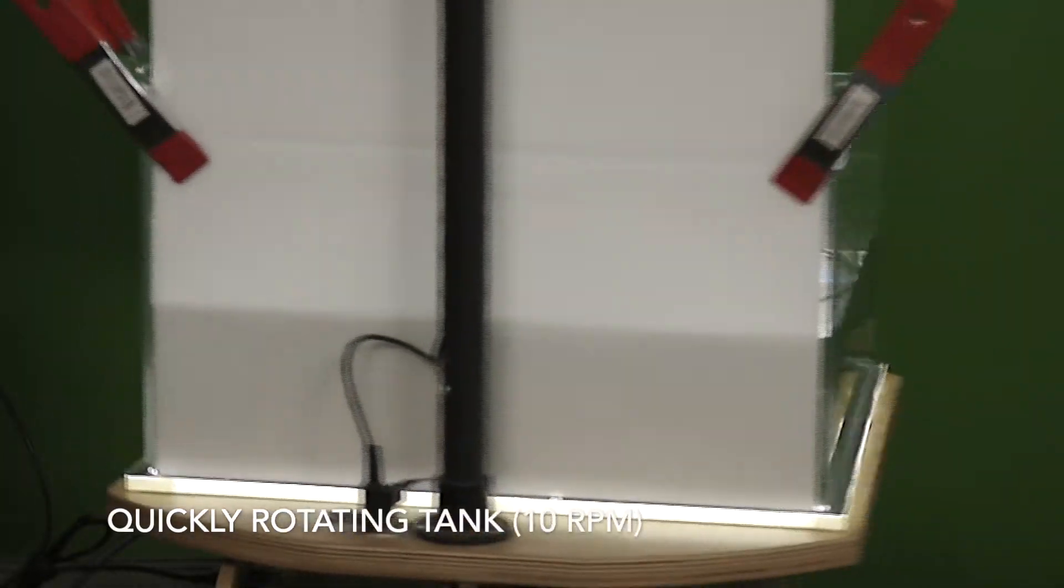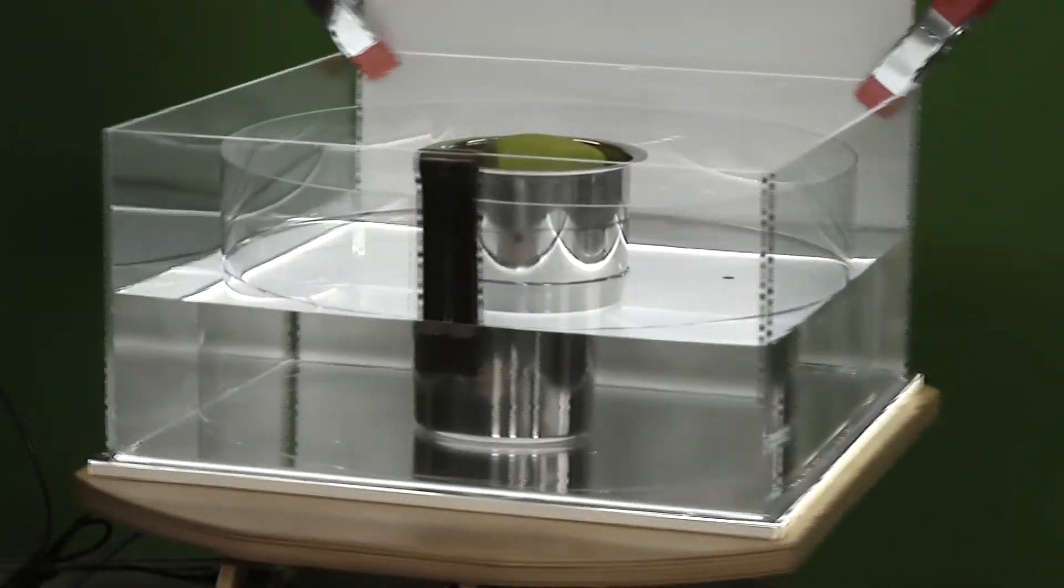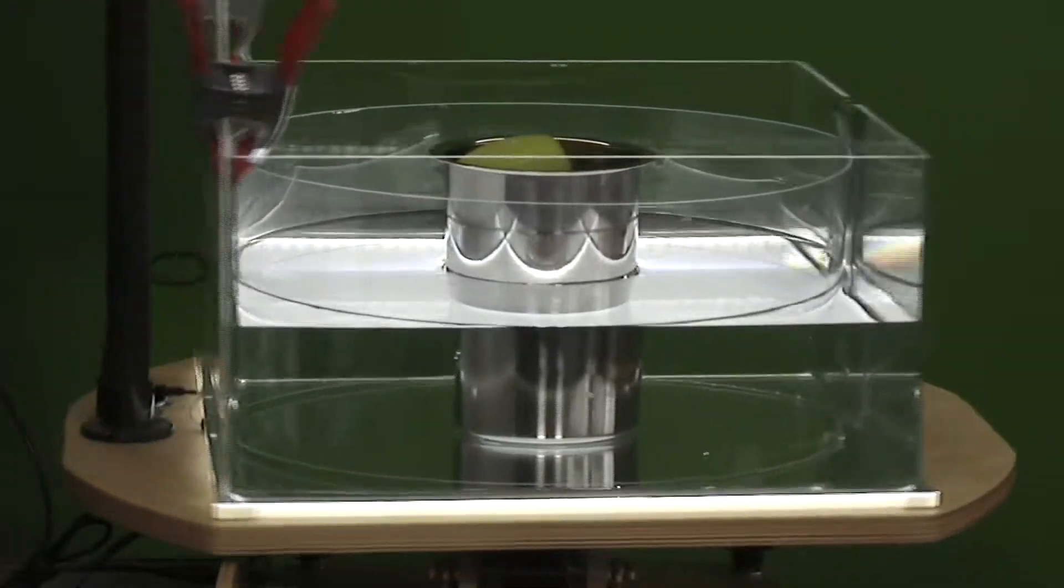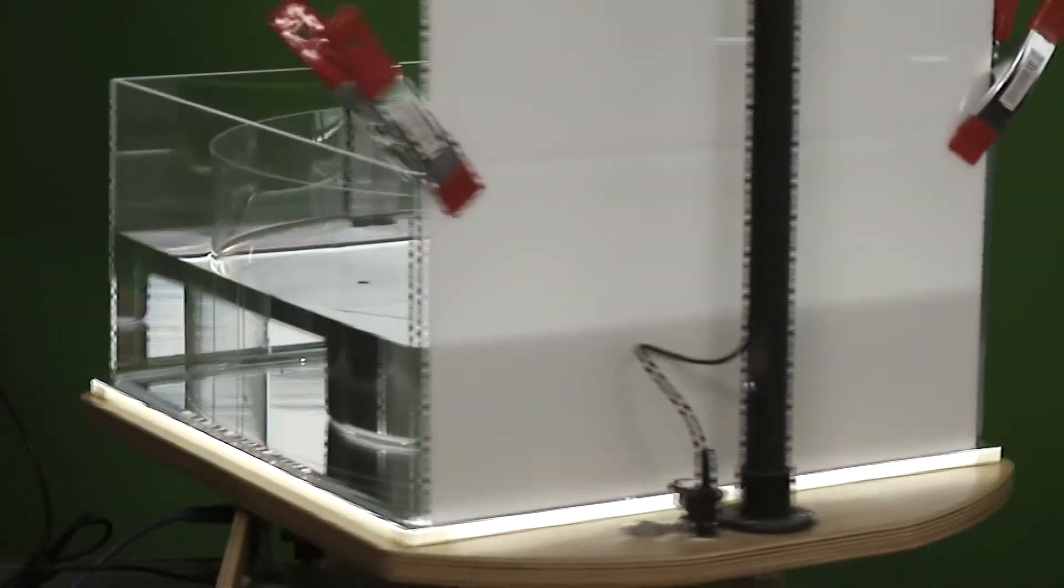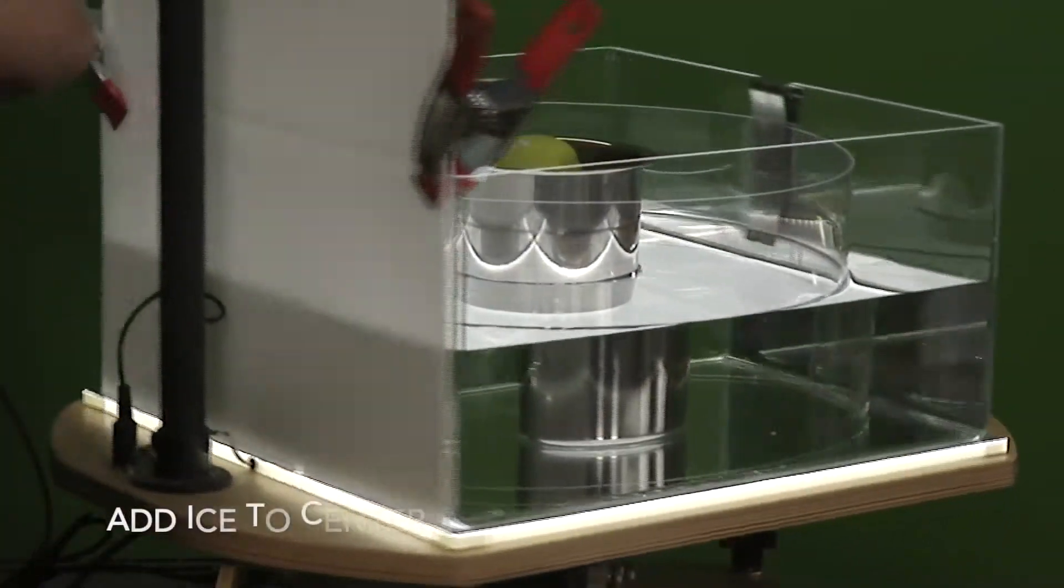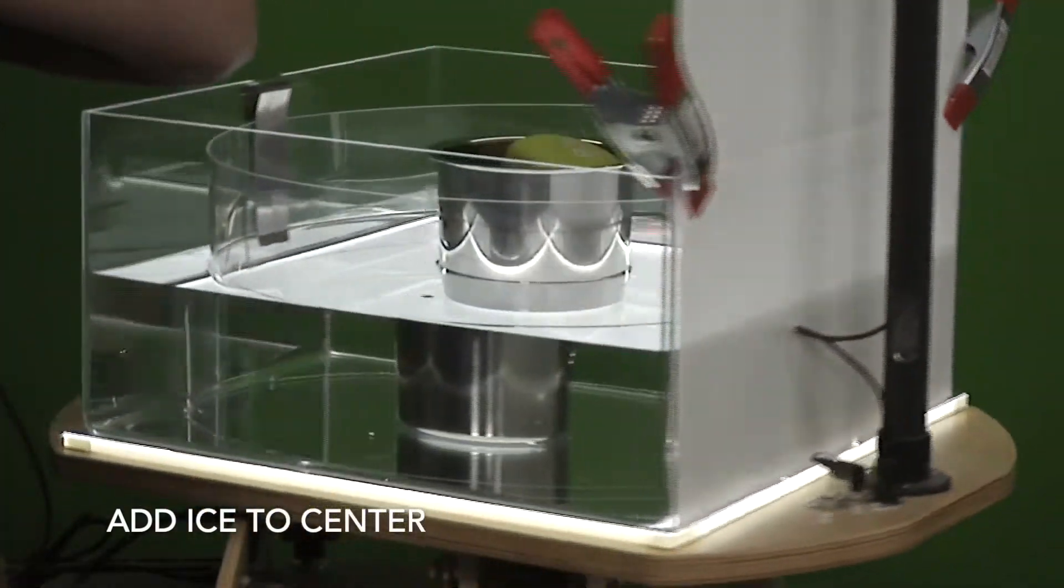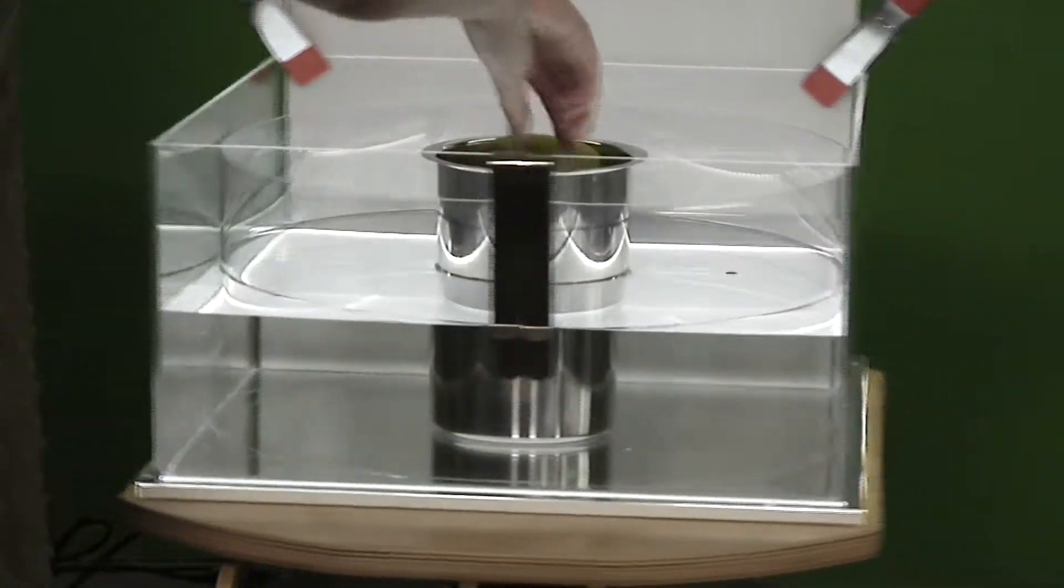We have a rotating tank set to a fast rotation rate of about 10 rpm to represent the mid-latitudes. After letting the tank spin up to solid body rotation, we add ice to the center of the tank.